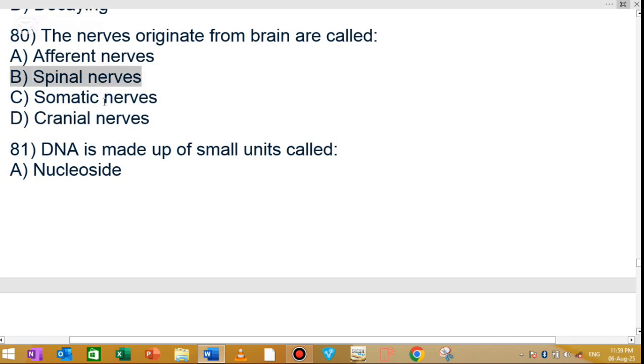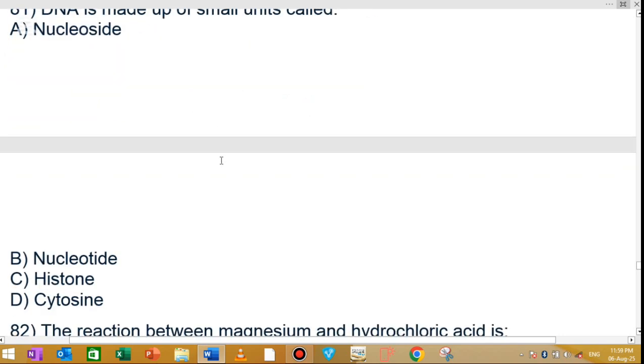MCQ number 81: DNA is made up of small units called nucleotides. Option B is the correct answer, nucleotide.